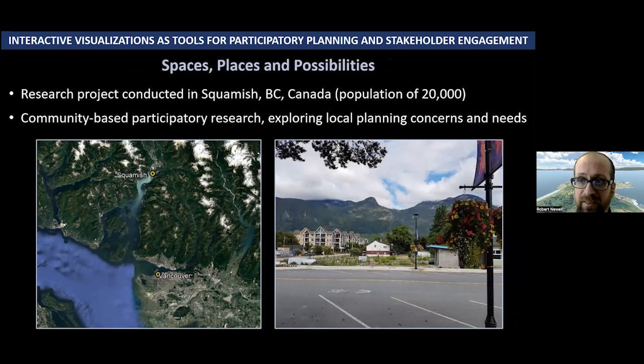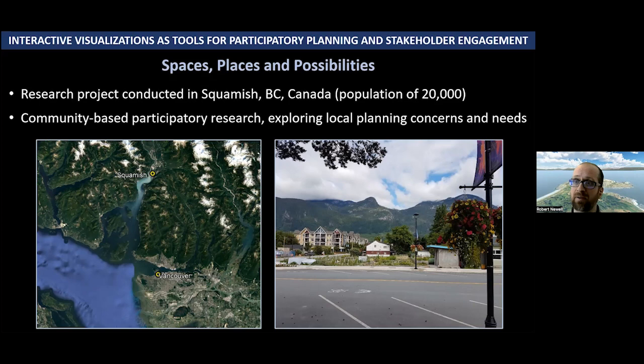Now we're moving to a very different context. We did a visualization project called Spaces, Places, and Possibilities in the city of Squamish, which is about 50 kilometers north of Vancouver with a population of about 20,000 at the time. The project took a community-based participatory research approach, engaging local government and stakeholders to figure out their local planning concerns and needs for thinking about how to plan and develop in the future. Squamish is a beautiful town located in a valley area with mountainscape views and a lot of outdoor recreation opportunities.